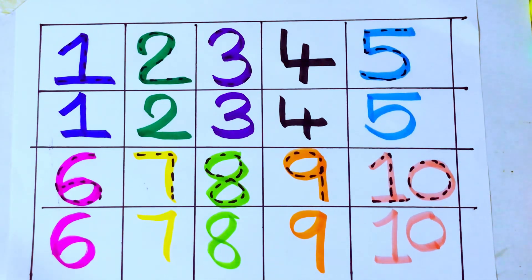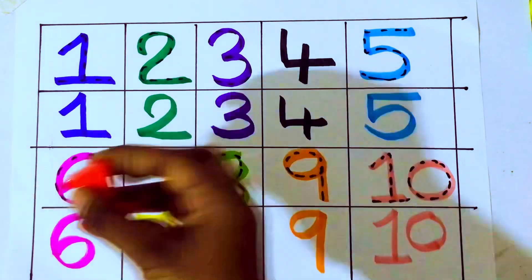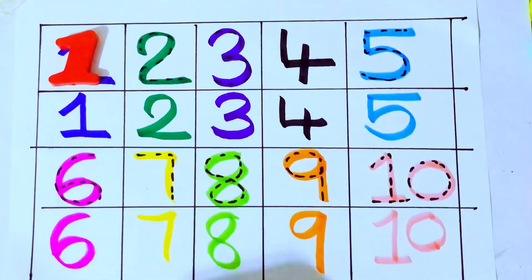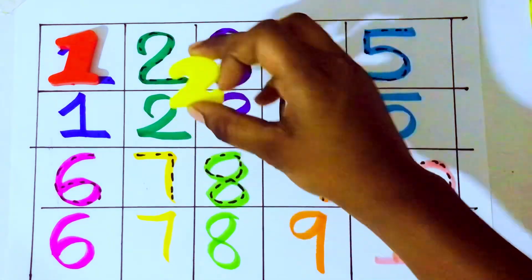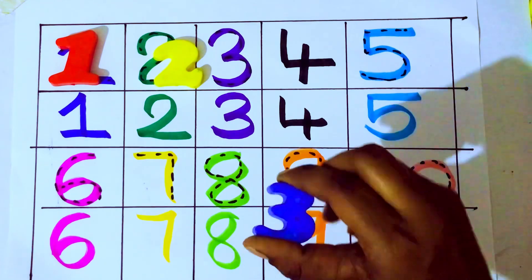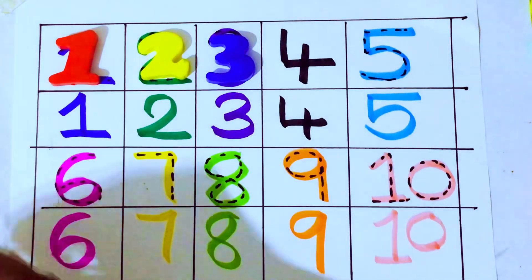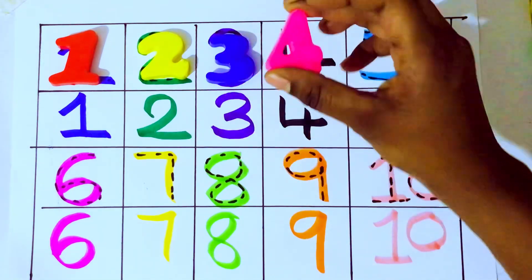Let's learn with the toys. Numbers with toys. Okay. 1. O-N-E. 1. 1 after 2. T-W-O. 2. 3. Which number kids? 3. T-H-R-E-E. 3. Next 4. F-O-U-R. 4.